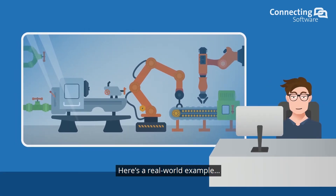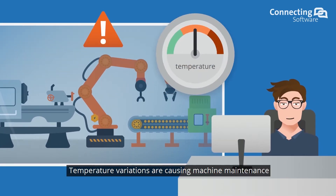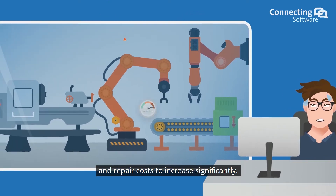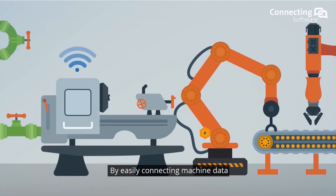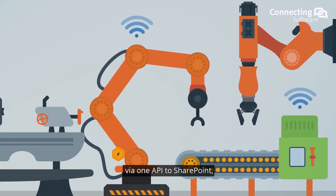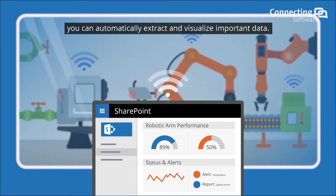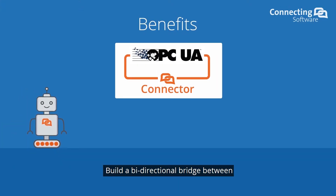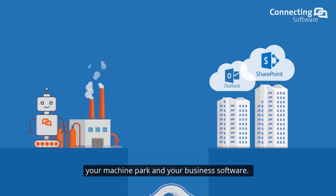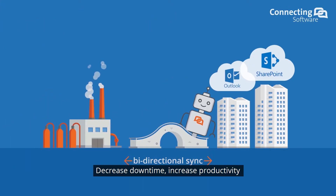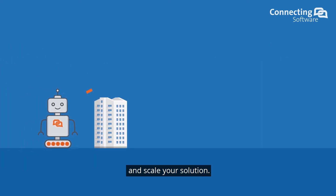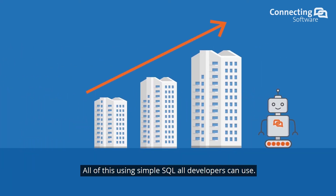Here's a real-world example. Temperature variations are causing machine maintenance and repair costs to increase significantly. By easily connecting machine data via one API to SharePoint, you can automatically extract and visualize the important data. Build a bi-directional bridge between your machine park and your business software. Decrease downtime, increase productivity and scale your solution.